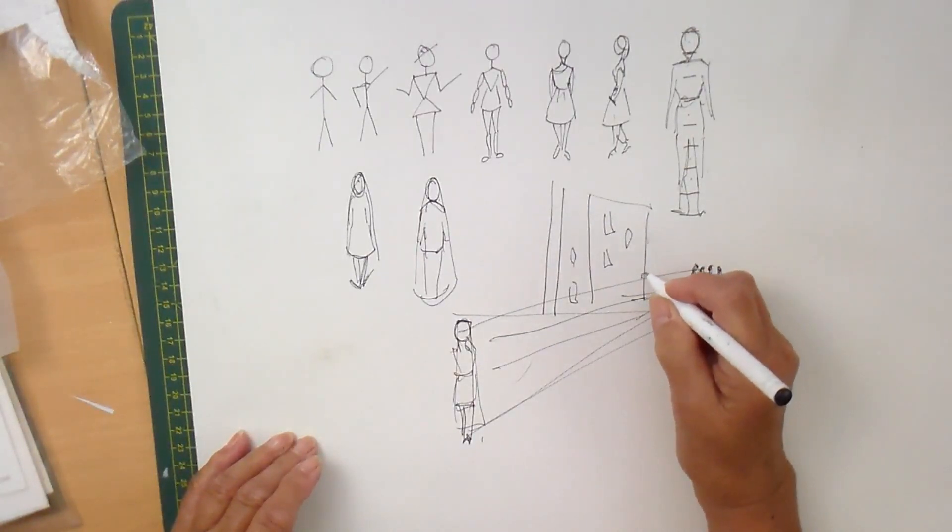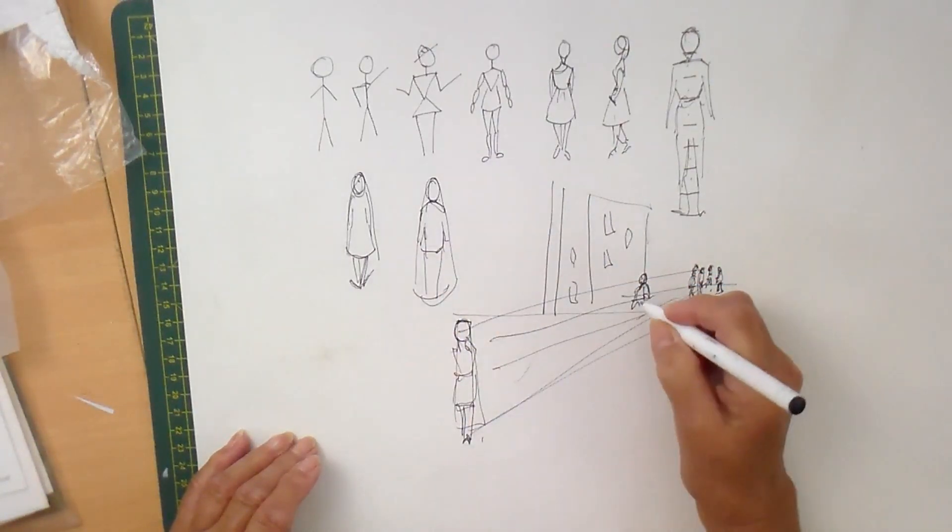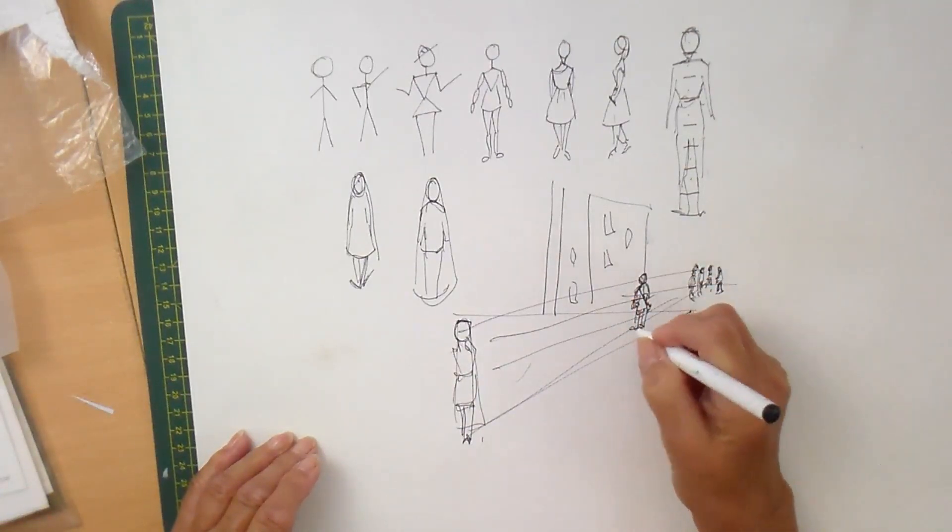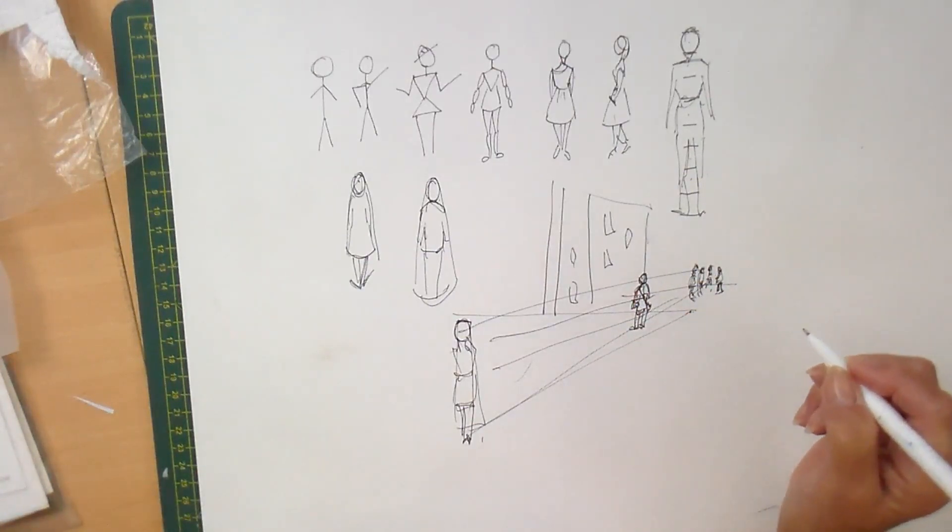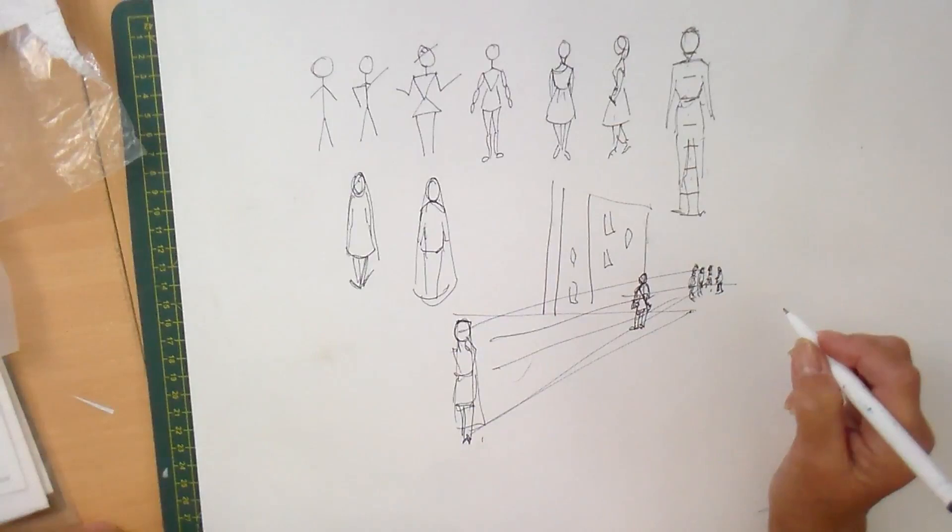And then as you come further back towards you. And again, I'm just using this sort of principle. I'm just saying, well, there we go. Trousers, foot, maybe a bag. Look in that way. So keeping it extremely simple, it is of course up to you how much detail you want to put in.